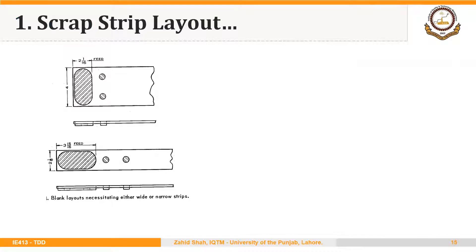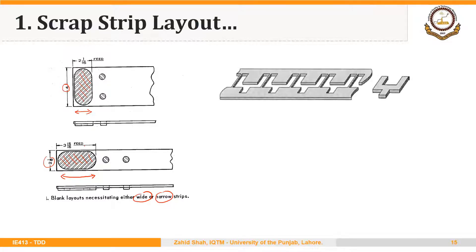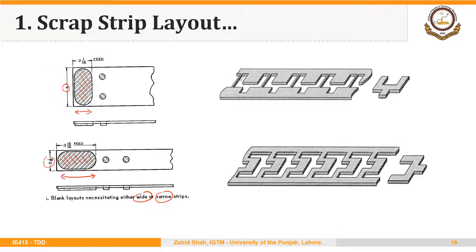Generally speaking, there are two options for scrap strip layout. In the first option, called the wide run layout, the blank is oriented such that the width required to make the blank is greater and the length required is less. The second layout is called the narrow run layout, in which the width of the strip required to make the blank is less but the length required is greater. There are other options as well, but these are two simple options to start with.